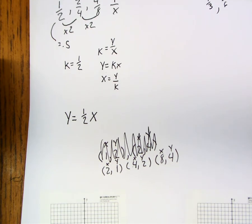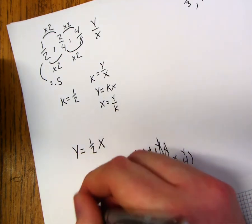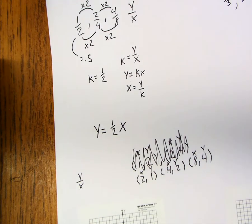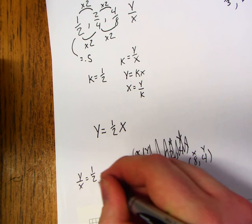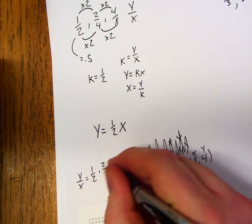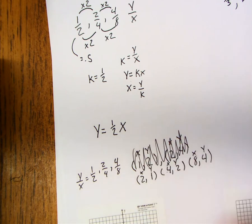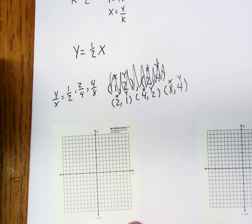But for now, let's also not forget that we had set of ratios, y over x, where we had one over two, two over four, and four over eight. Let's keep those in mind as well.